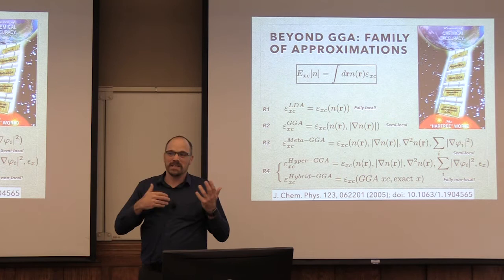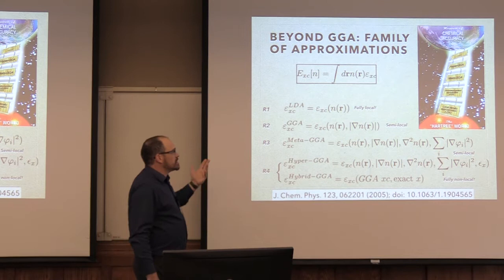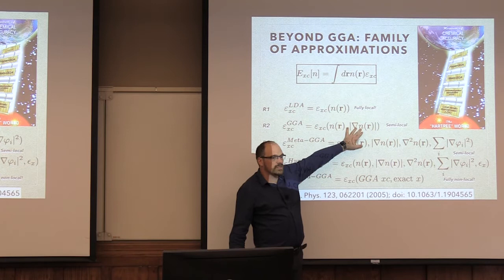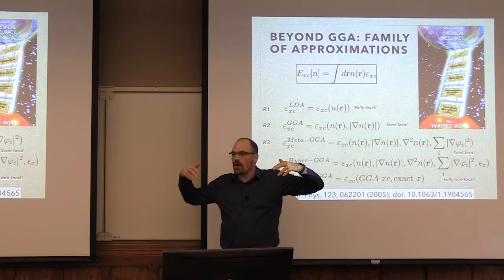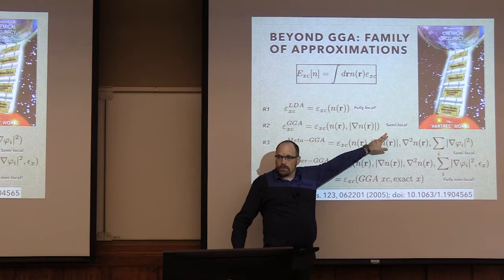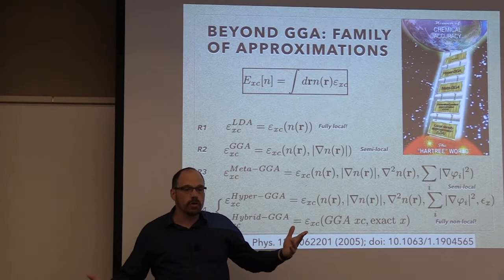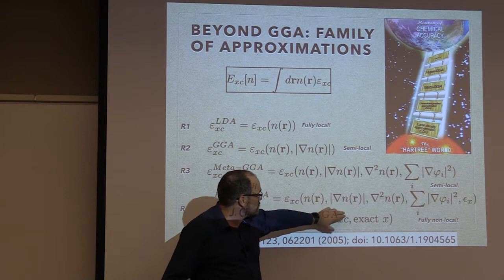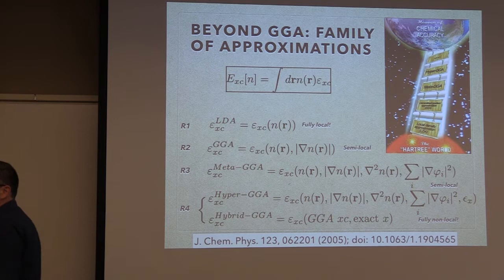People move on from LDA to GGA — you add a gradient of the density. Mathematically, when a functional only depends on the density itself, we call it local. When it also depends on the gradient, we call it semi-local. When it depends on higher-order effects, we call it non-local. It has been proven mathematically that the correct exchange-correlation functional is non-local — it depends not just on the density, but on the derivative, the second derivative, and so on. That's why it's so complicated.